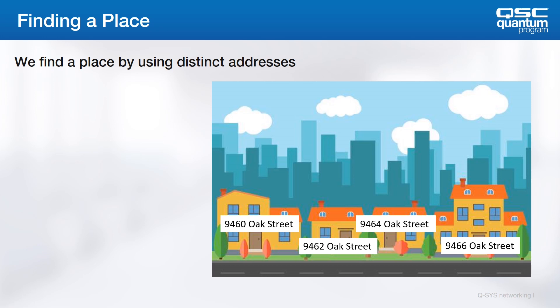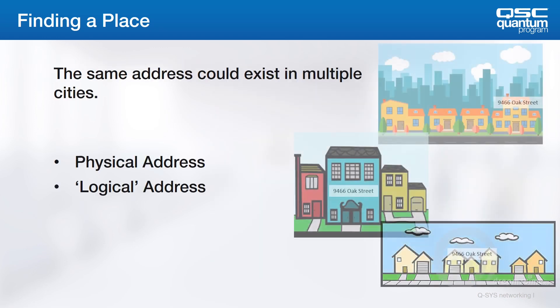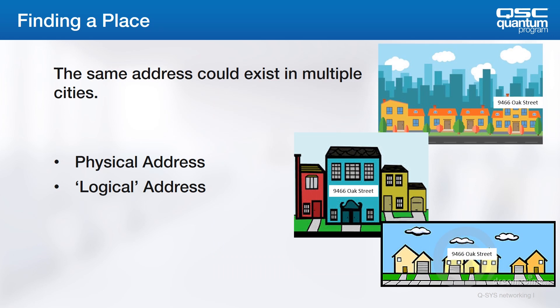We find a place by using a distinct street address. You don't want two of the same street addresses in the same city or you're going to have problems. But the same street address could exist in different cities. That marks the difference between a physical address — which in the real world might be represented by exact GPS coordinates — and a logical address, which is what humans use to direct ourselves.